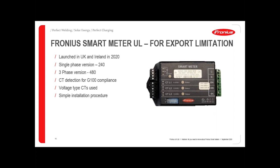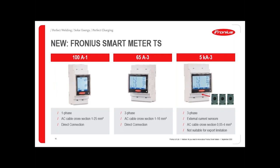I find this meter much easier to install because you simply look at the LEDs on the front of the meter to check that you have a good connection with the CTs, and the addressing is done using the DIP switches on the front of the device. We also have a new range of touchscreen smart meters — we're calling these the TS range. I want to really focus on the 100 amp meter, which is particularly useful for UK and Ireland where we have single-phase installations with up to 100 amp supply and 25 millimetre cross-sectional area cables for the incoming cables. We now have terminals on this meter that mean you can directly connect this after your main breaker within a building.